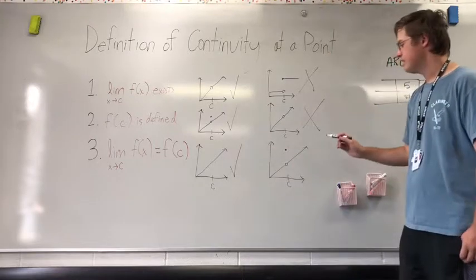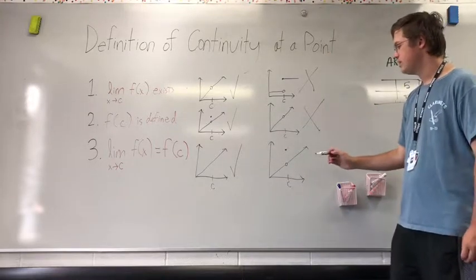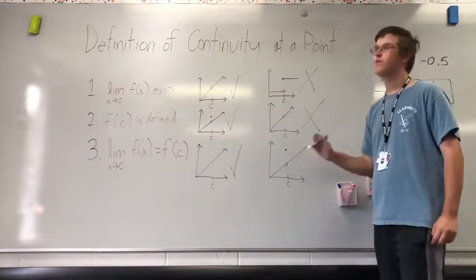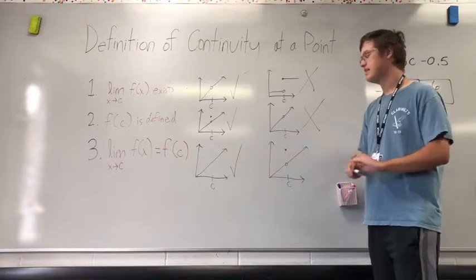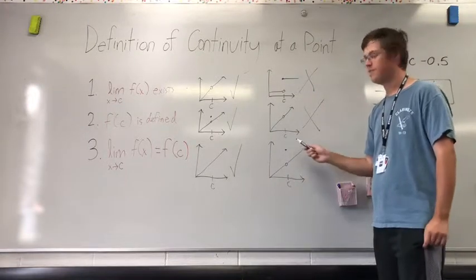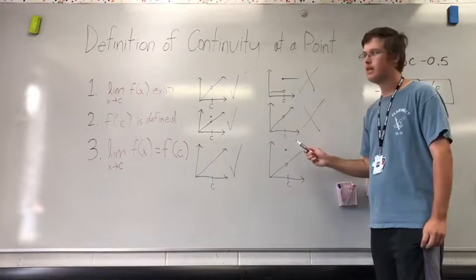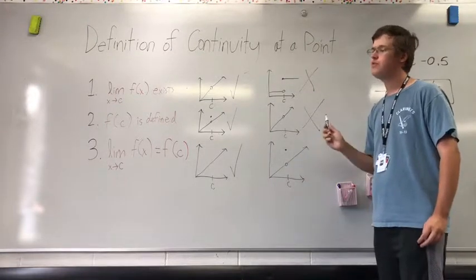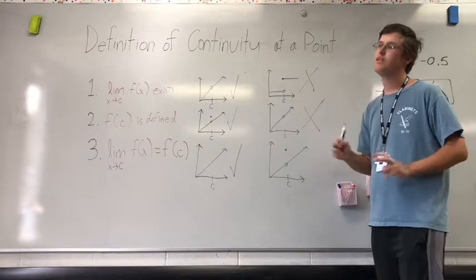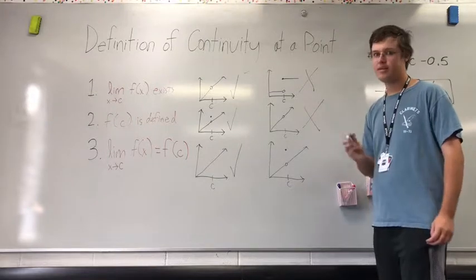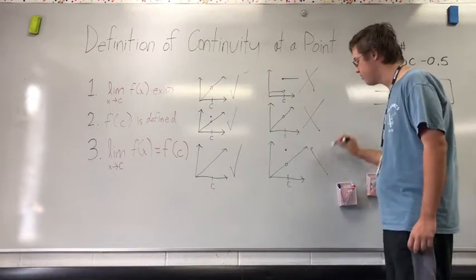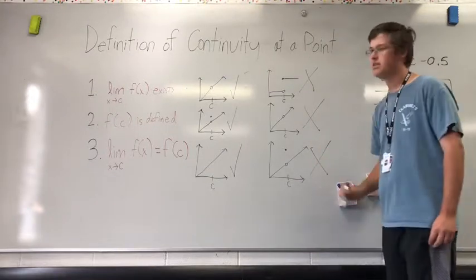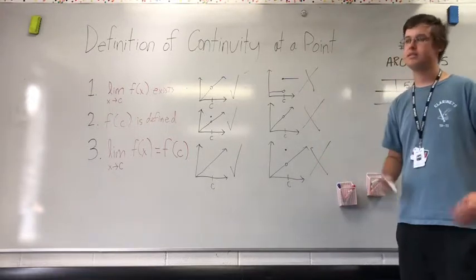When looking here, we see that although the first two requirements are met — since there is a limit and there is a defined point — these two values do not equal each other. Therefore, it doesn't meet the last requirement, and it is not continuous.